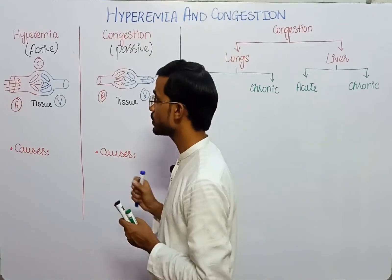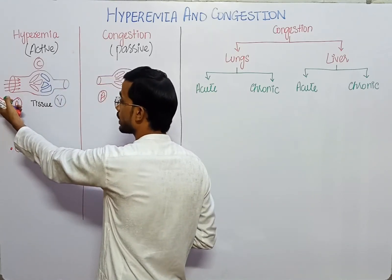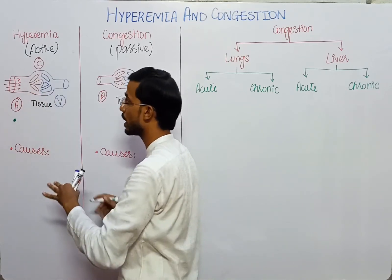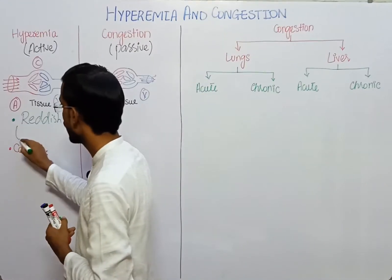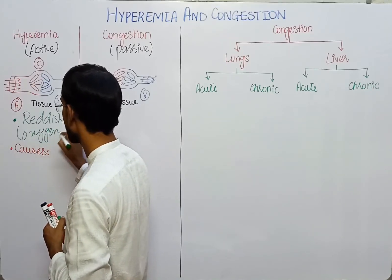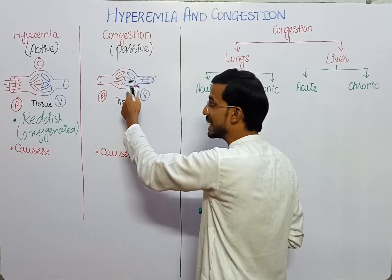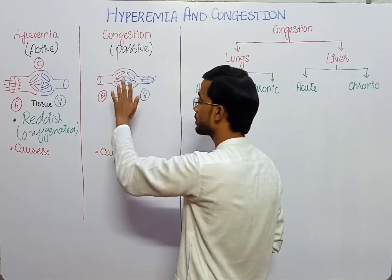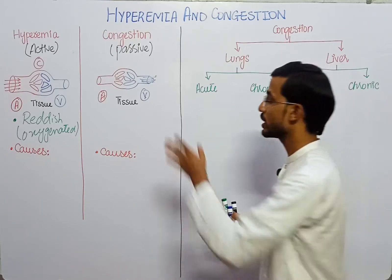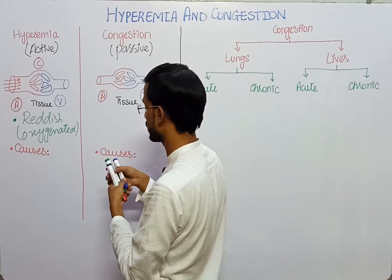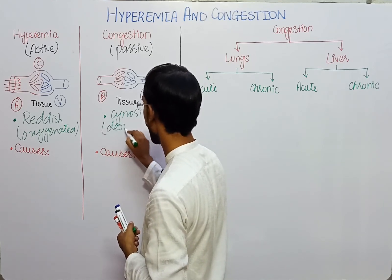In hyperemia, oxygenated blood retains in the tissues, and due to the oxygenated blood retention, the skin or tissues will be reddish. But in congestion, deoxygenated blood retains in the tissues because the deoxygenated blood cannot go back to the heart. So in that situation, the deoxygenated blood retains in the body and causes cyanosis — blueness — due to the deoxygenated blood.